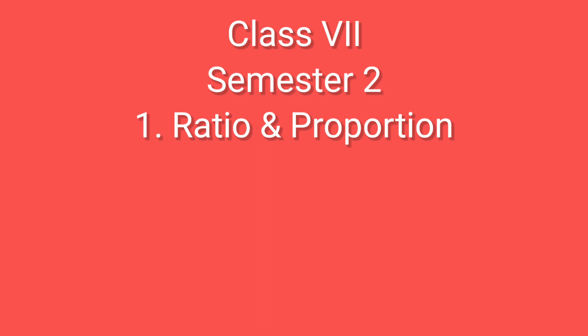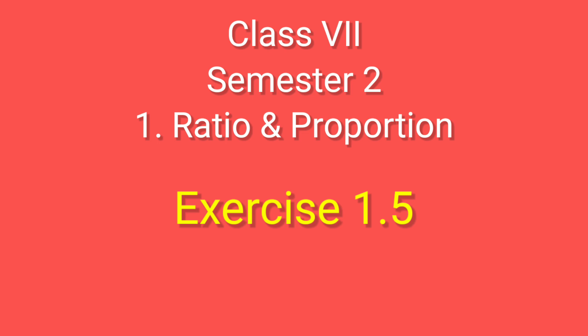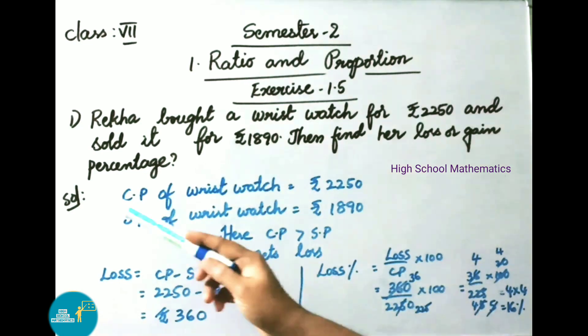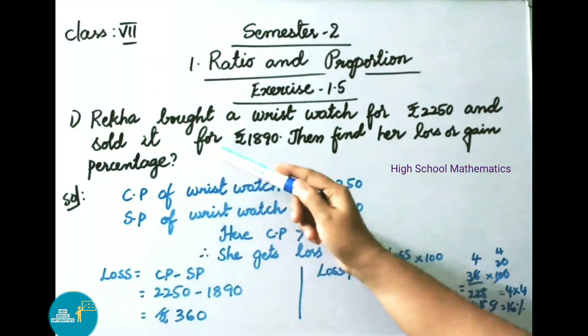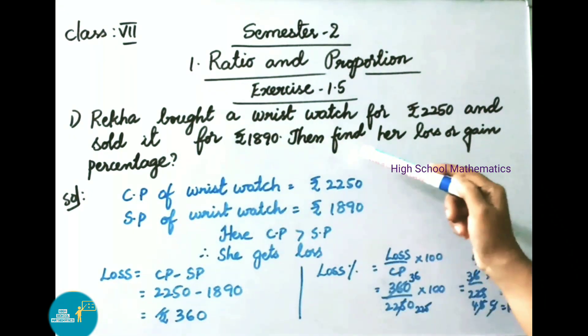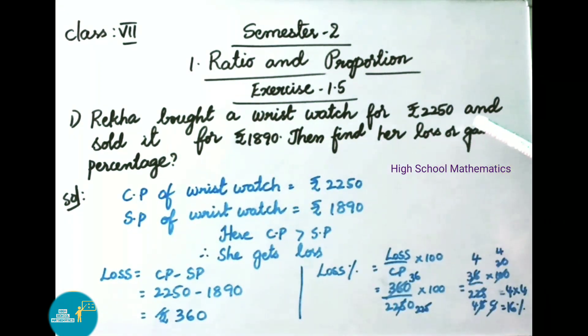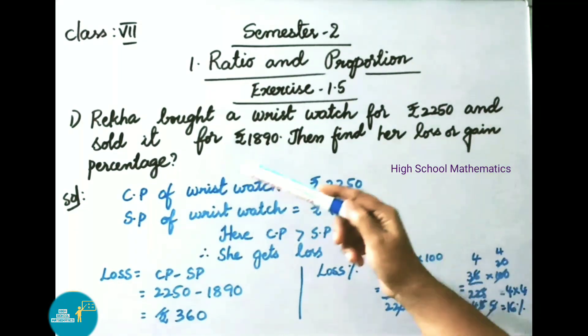Hello everyone, welcome to High School Mathematics channel. Today we are going to learn Class 7 Semester 2, Chapter 1, Ratio and Proportion, Exercise 1.5. Question number 1: Reka bought a wristwatch for 2250 rupees and sold it.